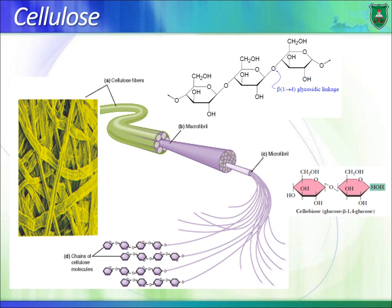Cellulose is also a homopolysaccharide made of glucose residues. The key difference from glycogen and starch is that cellulose uses beta-1,4 glycosidic bonds. Alpha glycosidic bonds are flexible and allow bending, which leads to the highly branched structures seen in glycogen and amylopectin. In contrast, the beta glycosidic linkage cannot be bent, creating a straight, unbranched chain.